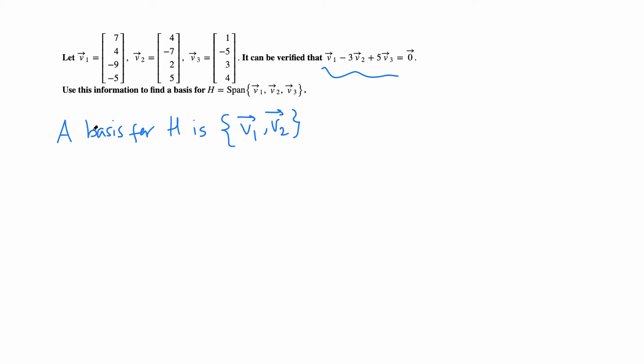So this is our basis for H: v1, v2. Or we can write v2 and v3 as well, as long as they are linearly independent.